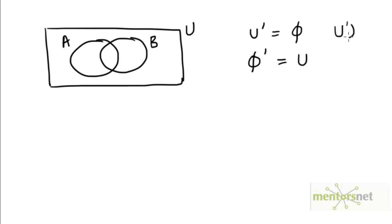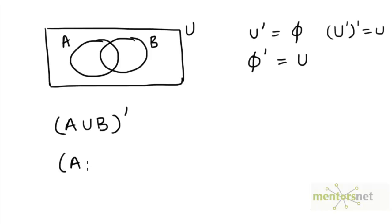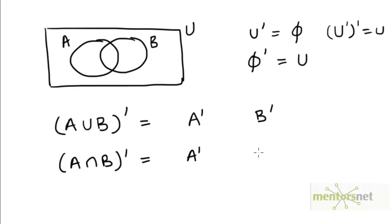We know that U complement should have been U. So if U complement is phi, phi complement must be U. Now let's take the complement of A union B and A intersection B and see if we can derive a formula for them. We want our formula to be in terms of A complement and B complement, so we want the complements to be applied to both A and B. We want to express A union B complement in terms of A complement and B complement.